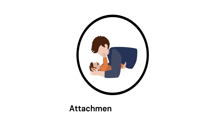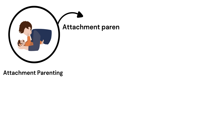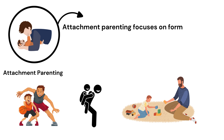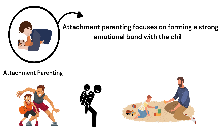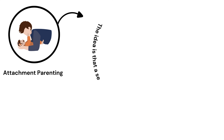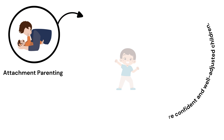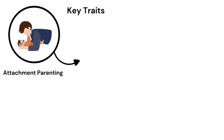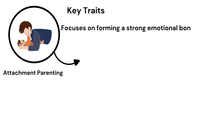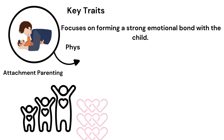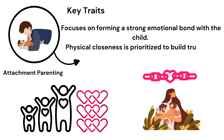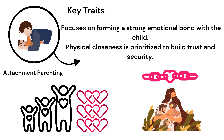Attachment Parenting. Attachment parenting focuses on forming a strong emotional bond with the child. The idea is that a secure attachment will lead to more confident and well-adjusted children. Key Traits: Focuses on forming a strong emotional bond with the child. Physical closeness is prioritized to build trust and security.